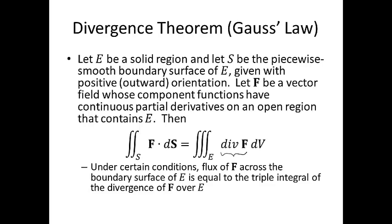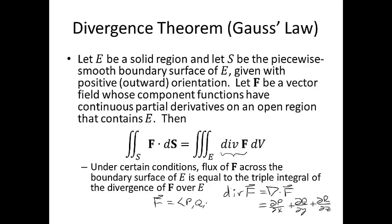Remember, the divergence of a vector field is a scalar function. The divergence of F, or del dot F, equals the partial derivative of the first component with respect to x, plus the partial derivative of the second component with respect to y, plus the partial derivative of the third component with respect to z, where your vector field F has components P, Q, and R. Therefore, you're taking the triple integral of a scalar function. All the theorems in this course relate the derivative of a function over a region to the integral of the original function over the boundary.